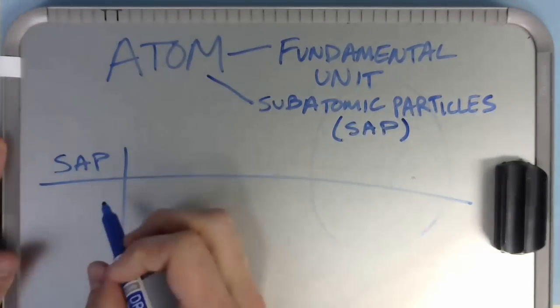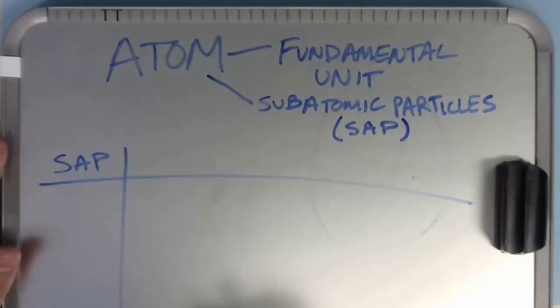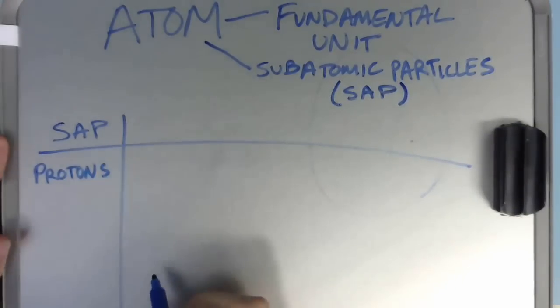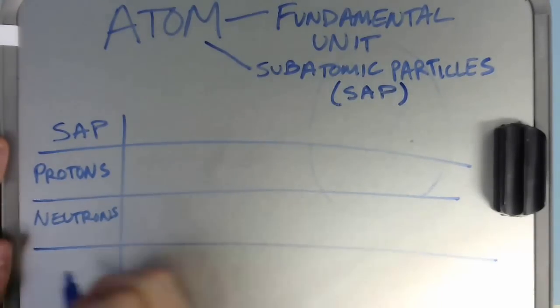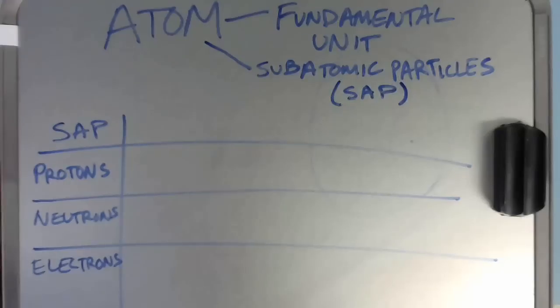Now there are three types of subatomic particles: protons, neutrons, and electrons.